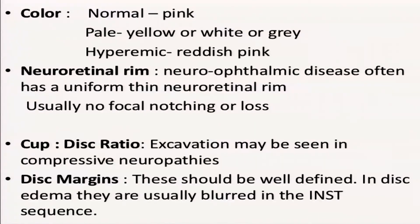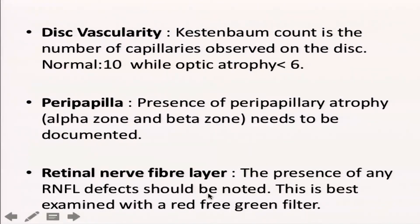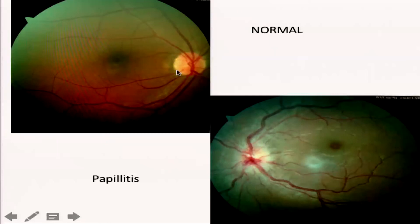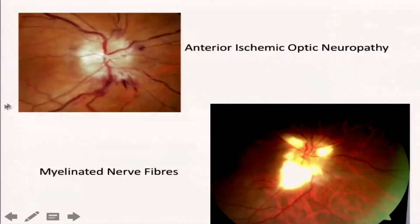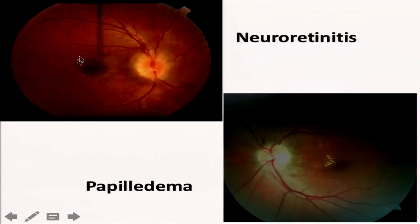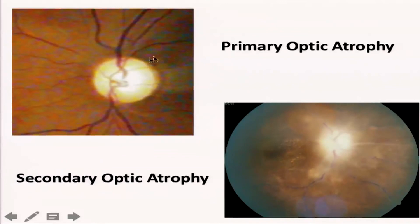In the disc examination, look at the size of the disc, whether the margins are clear, and the vessels — the Kestenbaum sign. Look at the neuroretinal rim: it should be pink, well-defined, and follow the ISNT rule. Unlike glaucoma, you won't get notching, but you may see thinning or pallor. Examples: a normal disc; papillitis shows a hyperemic disc with blurred margins; toxic neuropathy shows well-defined disc pallor; hypotensive retinopathy may show peripapillary hemorrhage; ischemic neuropathies; myelinated nerve fibers; neuroretinitis requires macula examination. In papilledema the disc margins are blurred; primary optic atrophy shows well-defined margins with a pale disc; secondary optic atrophy shows a dirty, gray disc with hazy margins.